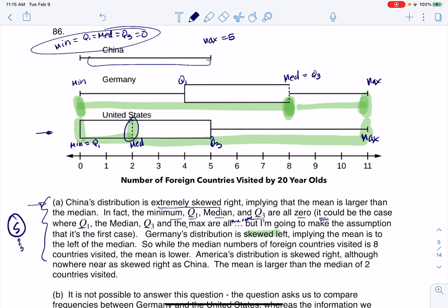So I would say that China's distribution was extremely skewed right, which is similar to the United States' distribution, whereas Germany's distribution was skewed left.